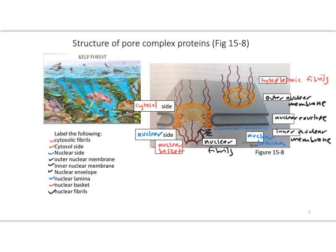Here's the labeled figure — this is figure 15-8 in your book. We always want to get oriented about where we're at. The cytosol side is up at the top, and the nuclear side is on the bottom. One of the main ways we can tell that is based on the nuclear lamina, which is made up of intermediate filaments — we talked about that with the cytoskeleton. This helps to cushion and stabilize the nucleus and protect the DNA from damage.